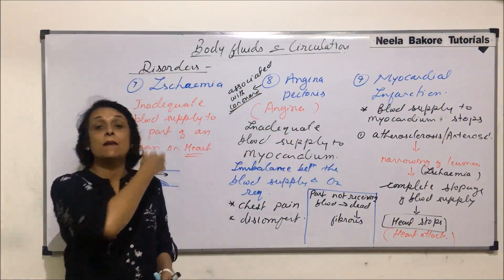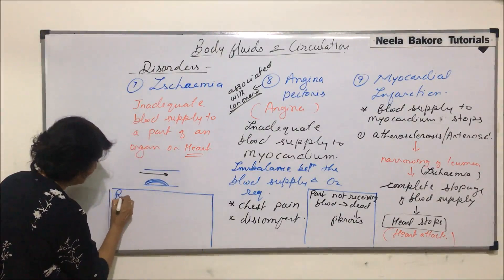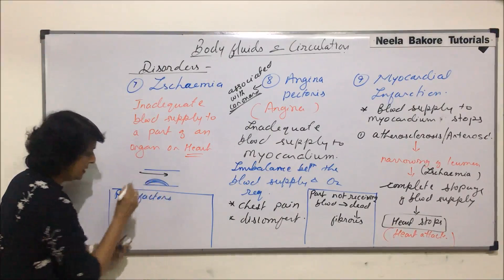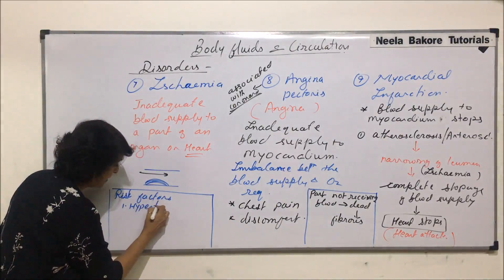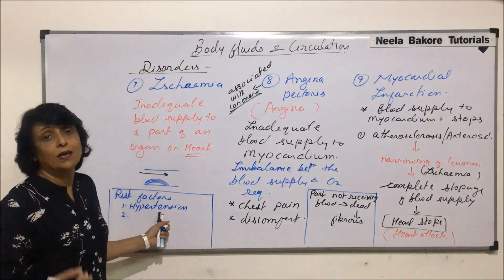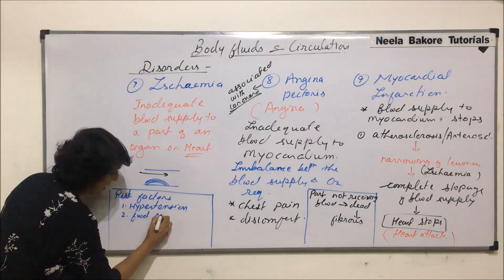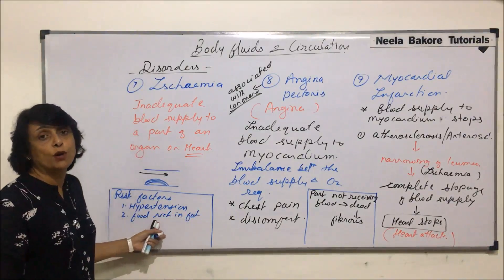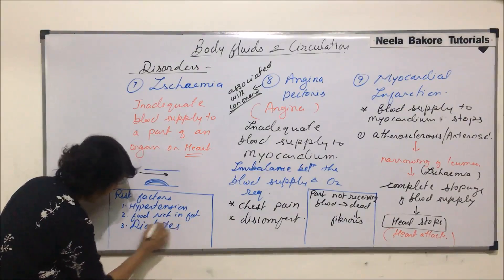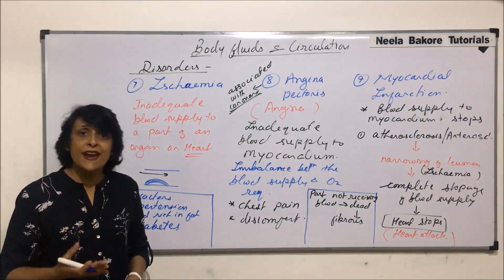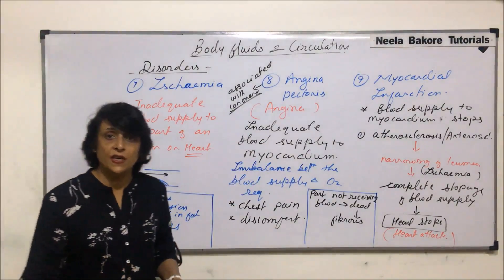There are certain risk factors for all three of these conditions. Number one is high blood pressure, that is hypertension. It can also be due to a lethargic lifestyle and consumption of fatty food — food rich in fat that we are not able to burn. There is also risk because of diabetes, and fourth is overweight or obesity. Overweightness or obesity also increases the risk of these heart-related conditions.